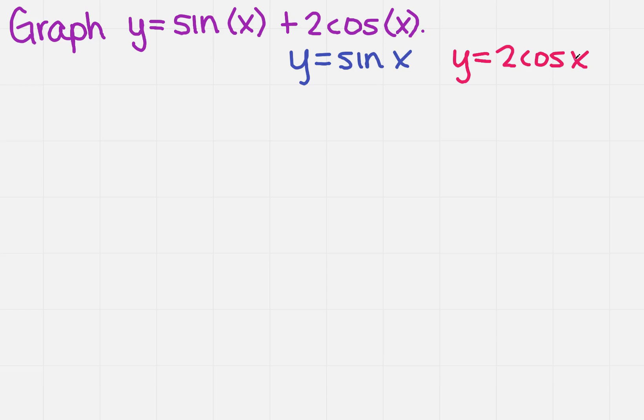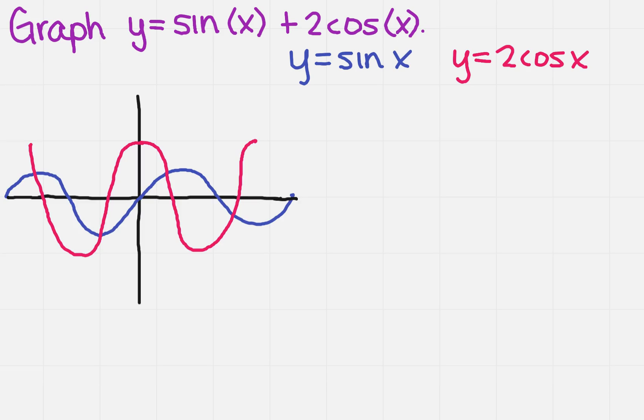So now your graphs should resemble mine. I know they're not exactly perfect, and they're not exactly the greatest looking in the world, but you get the idea. I've got the sine, and then I've also got 2 cosine of x.